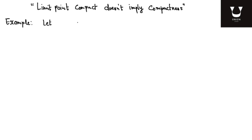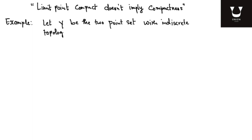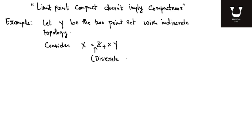So the example is the following. Let Y be the two-point set with the indiscrete topology. Then consider X equal to Z+ cross Y. Z+ is the set of all positive integers, with the discrete topology. Y is a topological space with the indiscrete topology and Z+ is a topological space with the discrete topology.